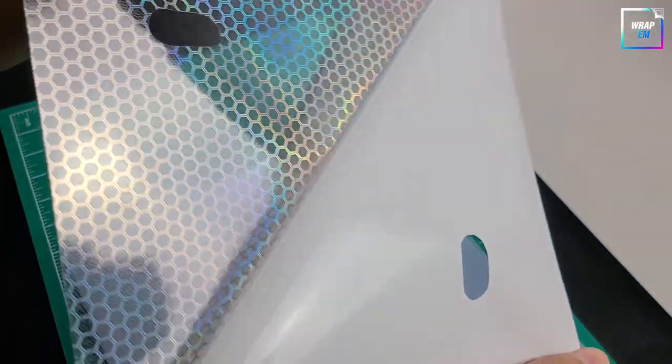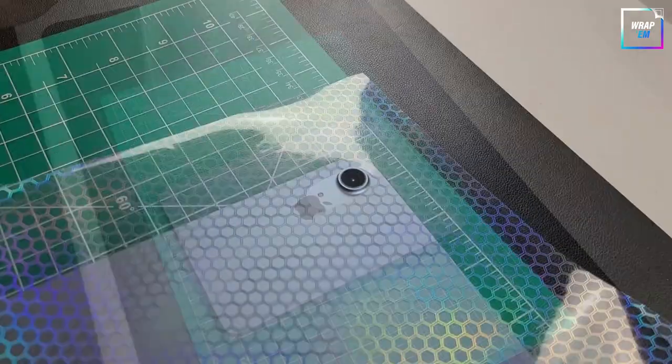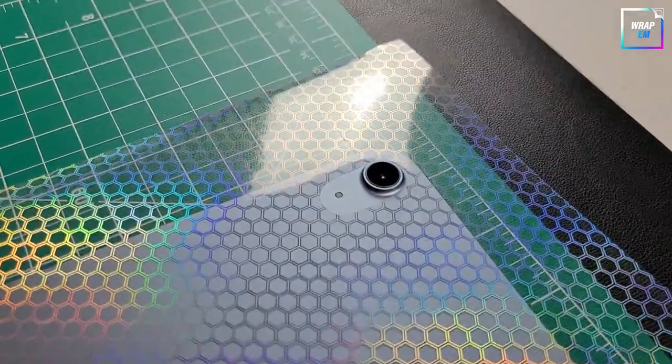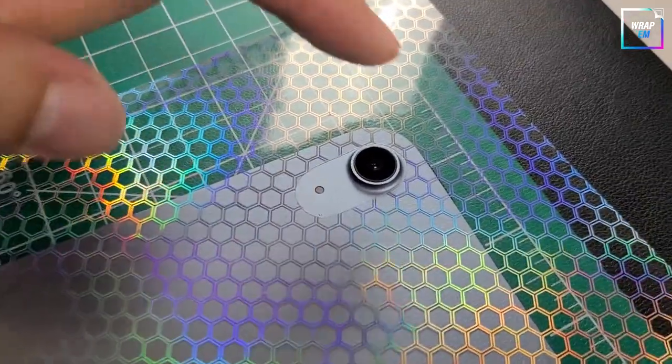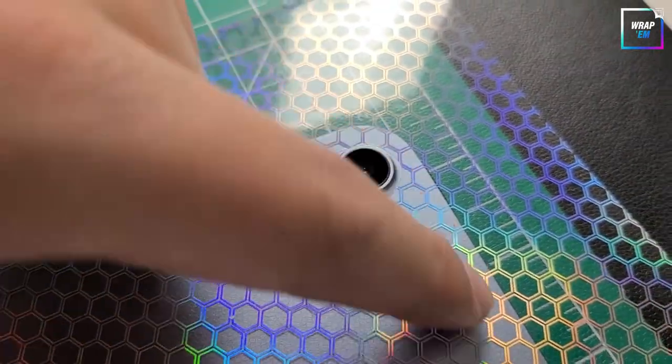Gently peel away the paper back. Use the camera hole as a reference and lay the vinyl flat on top of the surface with some excess sticking out on the top. Try to line up the honeycomb straight to the edge of the iPad for a clean finish.